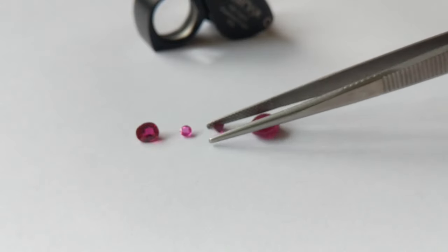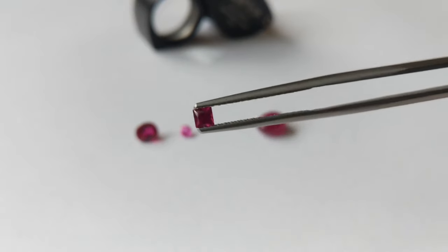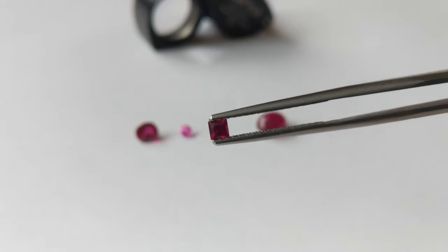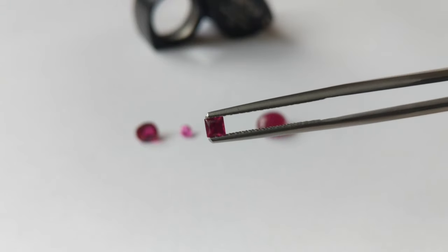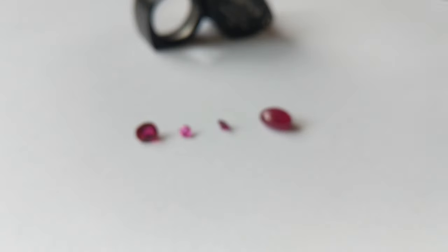The second one right here is a princess cut squarish, again quite small, not so clean, nice red.